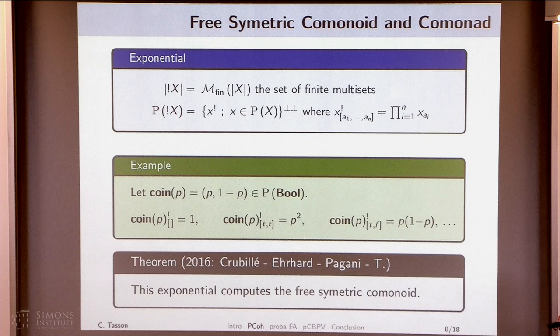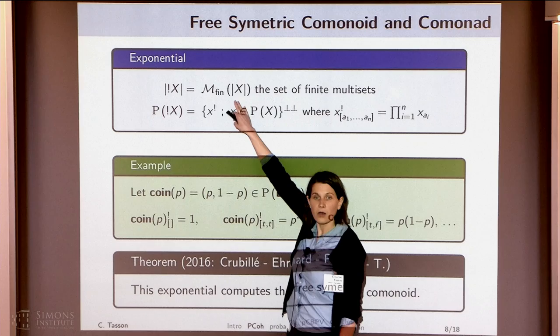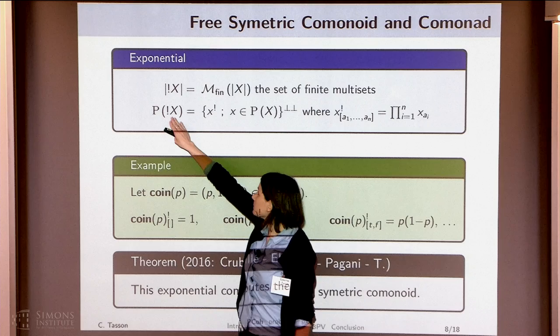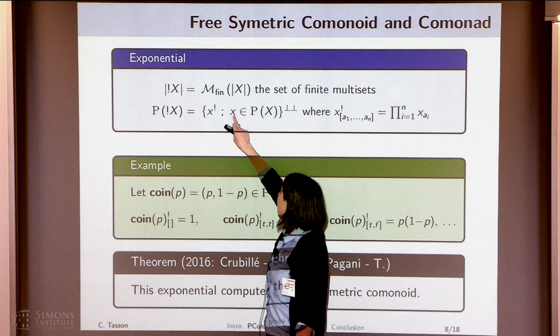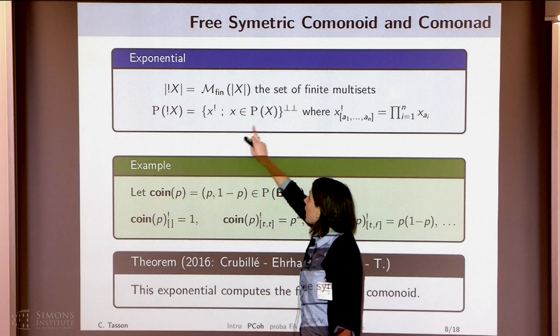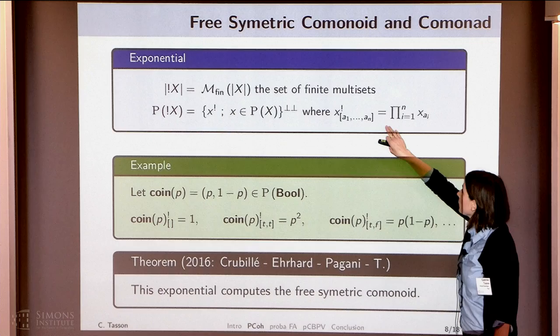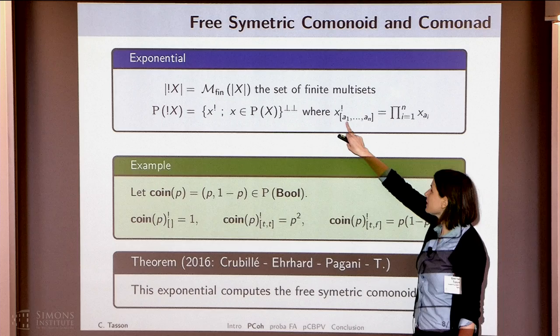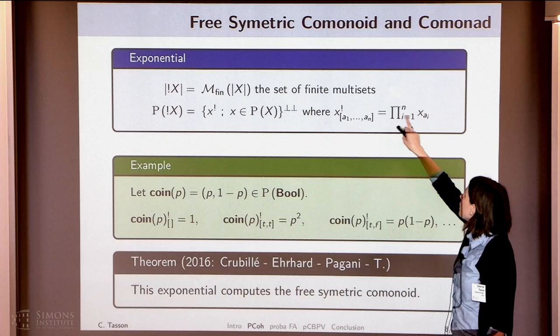To go from the linear world to the non-linear one, we need the exponential. The indices of the vectors will be finite multi-sets, and the probabilistic space will be generated by vectors where x is in the given probabilistic space. The exponential of x is defined as follows: the coefficient associated to a finite multi-set is the multiplication of these coefficients. So the exponential of x can be seen as a bag of copies of x.